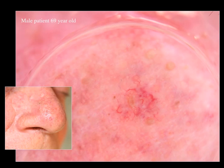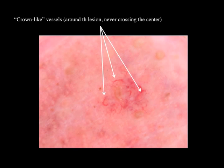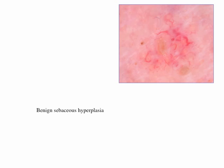You have a few minutes to think about it. And here are my comments. You can see that the vessels are crown-like, meaning they do not cross the center of the lesion, and in the center you have a yellowish structureless area. This is typical of a benign sebaceous hyperplasia. It's a benign lesion and no treatment is required.